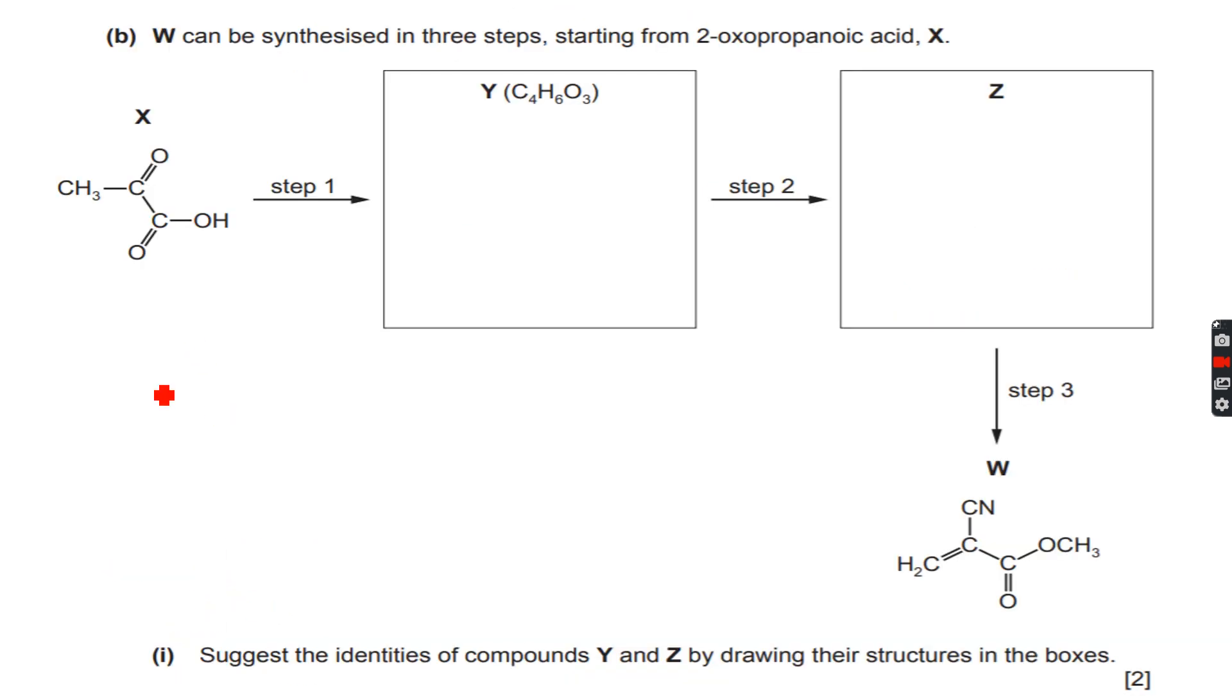Now let's do the next question. W can be synthesized in three steps starting from 2-oxopropanoic acid, X. So this is 2-oxopropanoic acid. We have X over here. Then we are going to Y and then to Z and then we are forming W. So from X to W, we are taking these steps and then we are forming W.